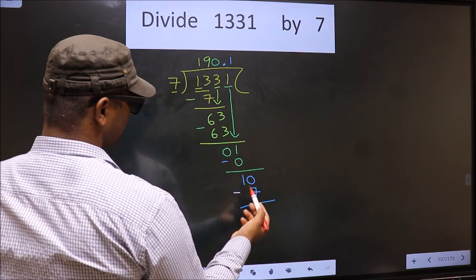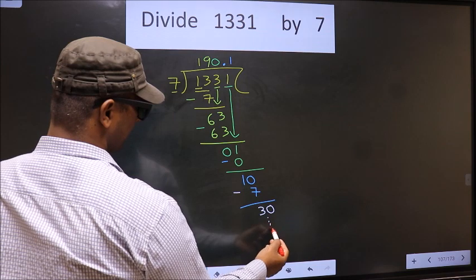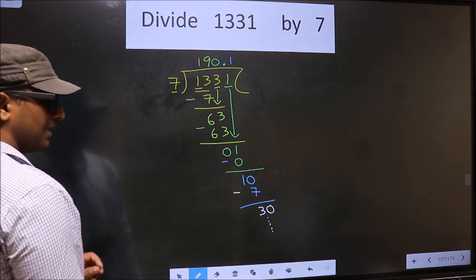10 minus 7 is 3. 3 is smaller than 7. We already have the decimal. So you directly take 0 and continue the division. I am not doing that.